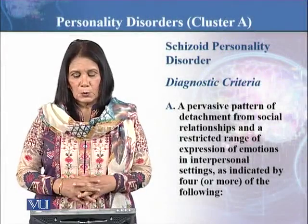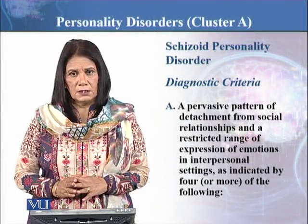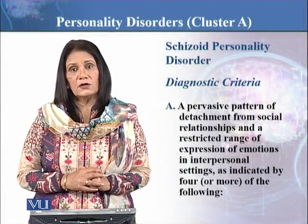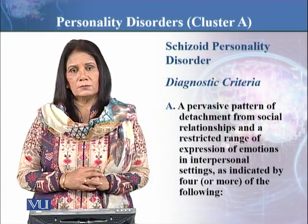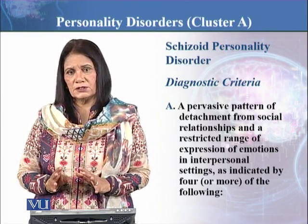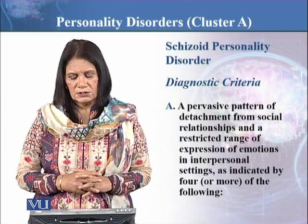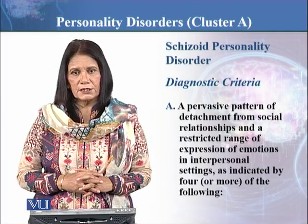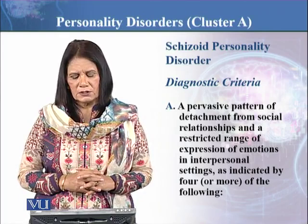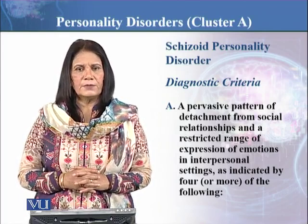The next one is Schizoid Personality Disorder in Cluster A. Its diagnostic criteria — the main feature is detachment from social relationships. There is a pervasive pattern of detachment from social relationships and a restricted range of expressions of emotions in interpersonal relationships, indicated by four of the following symptoms.